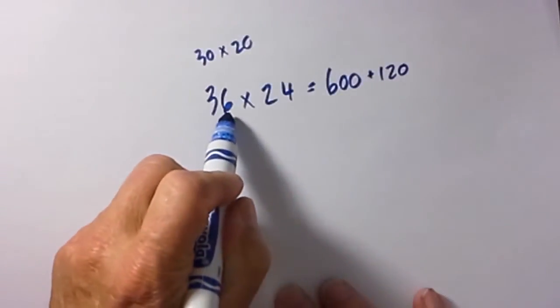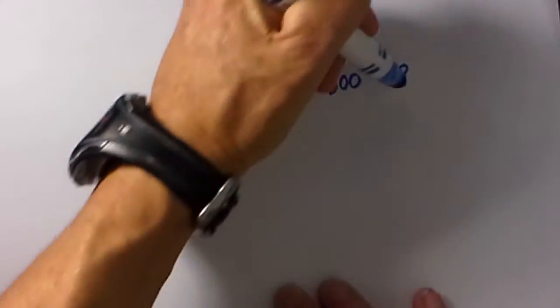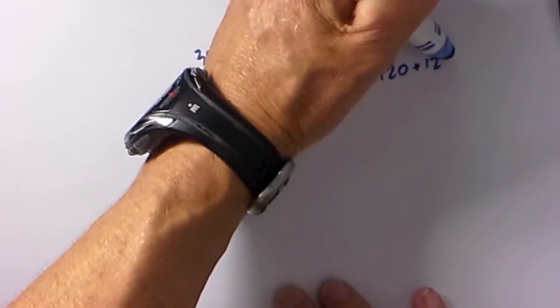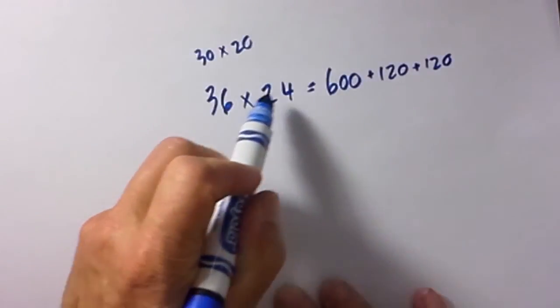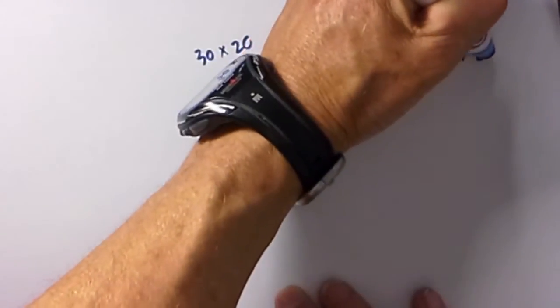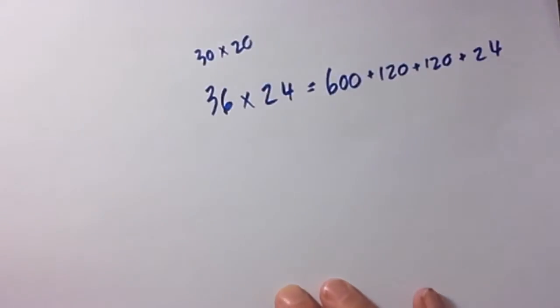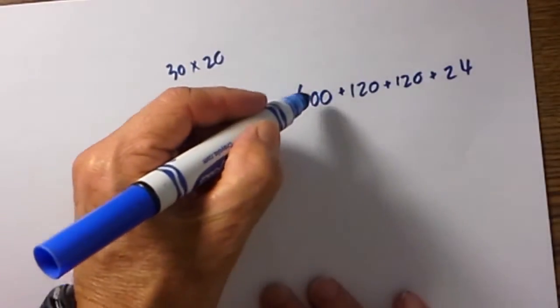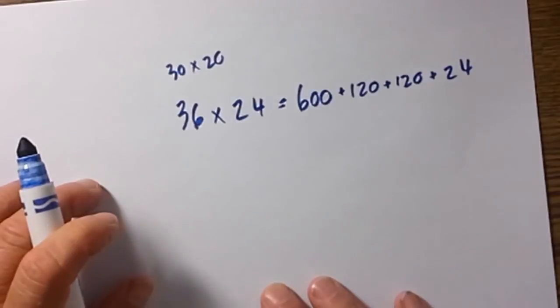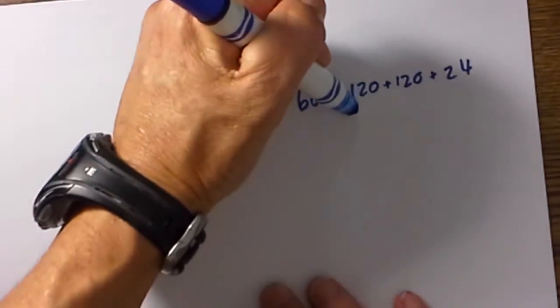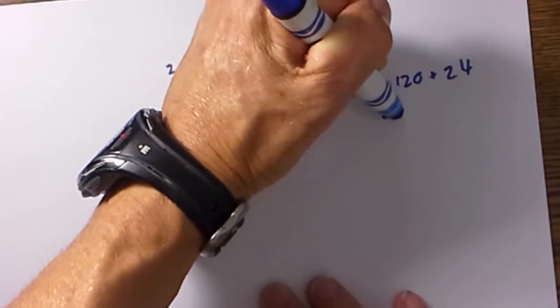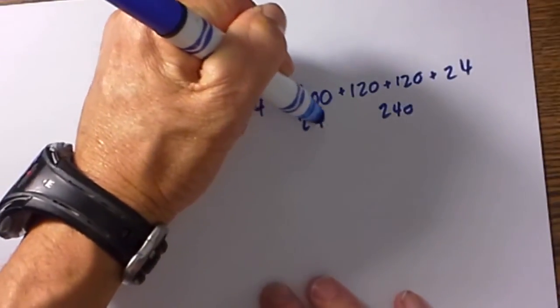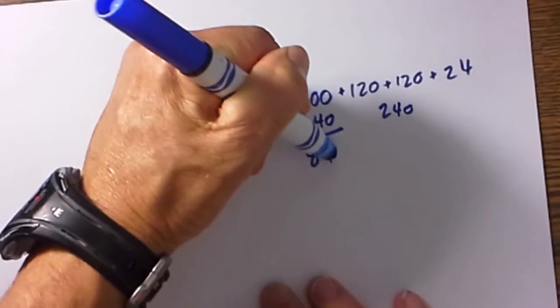Then we move to the second digit, 6 times 20 is 120. Then 6 times 4 is 24. We then total these up in any fashion that we think is the easiest. I'm going to total these two first. 120 and 120 is 240. 240 and 600 is 840.